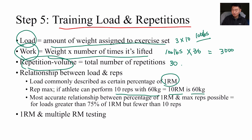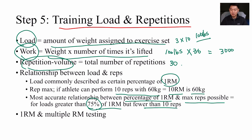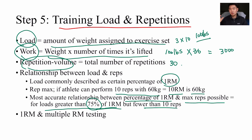The most accurate relationship between percentage of one rep max and maximum reps possible is for loads greater than 75% of your one rep max but fewer than 10 reps. That one rep max equation works best at those heavier loads while keeping reps below 10 to stay accurate. One rep max and multiple rep max testing was covered in the previous chapter.